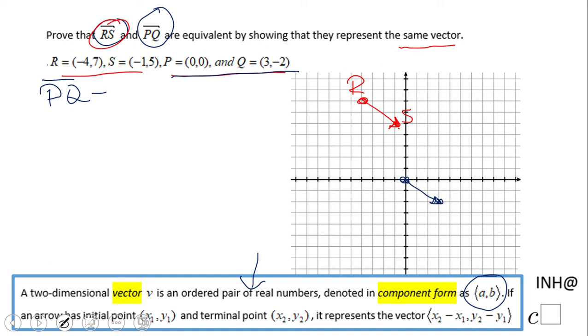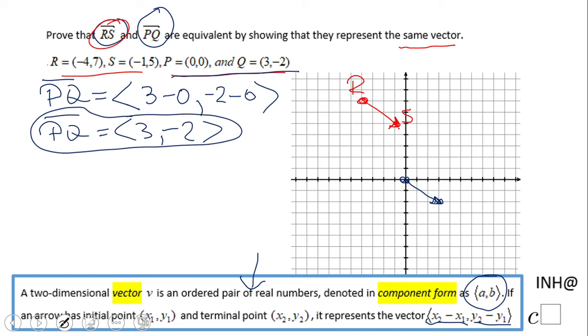PQ in component form will be (3 minus 0) comma (-2 minus 0). Notice here, x2 minus x1, y2 minus y1. So PQ will be nothing else than (3, -2).